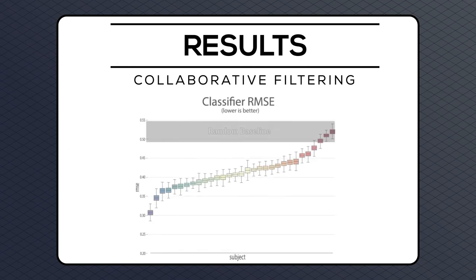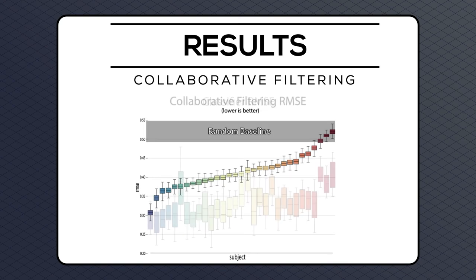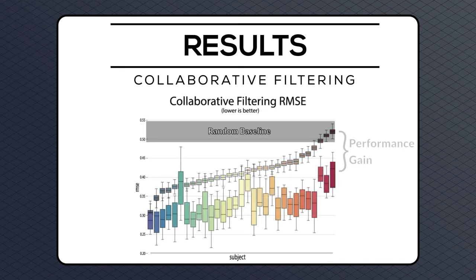Comparing changes in per-subject performance between the preference inference and collaborative filtering steps, accuracy significantly improved for the overwhelming majority of subjects. This suggests that meaningful information is being recovered during the collaborative filtering step and that the brain-based model is working as intended.